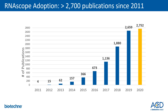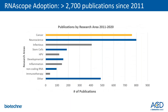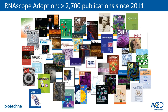Since its launch, RNAscope has been utilized in over 2,700 publications spanning a wide range of fields, from cancer to infectious disease to immunotherapy and more. These publications have appeared in the top journals, as well as top specialty journals including neurology and pathology.